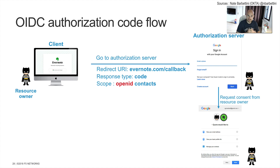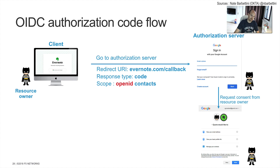Batman authenticates — username, password, MFA — and then Batman has to consent. Batman consents to accept Evernote to get information from his email address, his basic profile information, and to manage the contacts. 'Manage' means download, delete — we don't know exactly. But it's to manage the contacts.